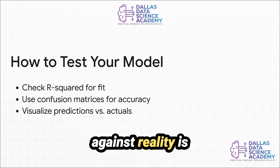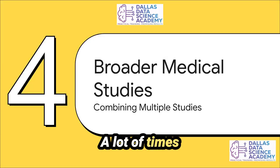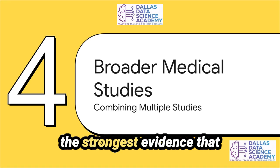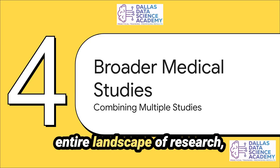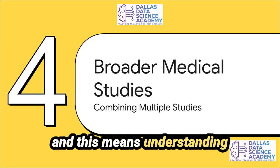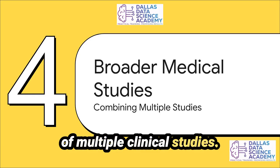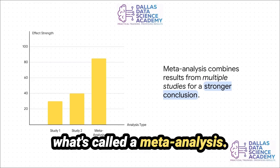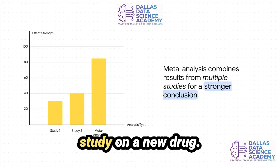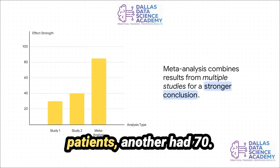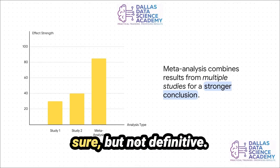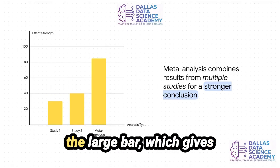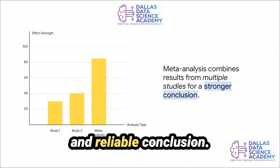A lot of times our investigation needs to zoom out. A single dataset can give us great clues, but the strongest evidence comes from looking at the entire landscape of research — understanding and combining the results of multiple clinical studies. This is the incredible power of a meta-analysis. Imagine each small bar is a separate study on a new drug: maybe one study had 50 patients, another had 70. By statistically combining them, we get the power of a single massive study — that's the large bar — which gives us a much more confident and reliable conclusion.